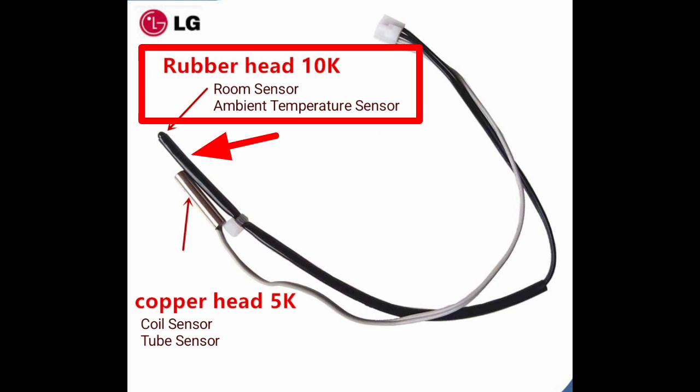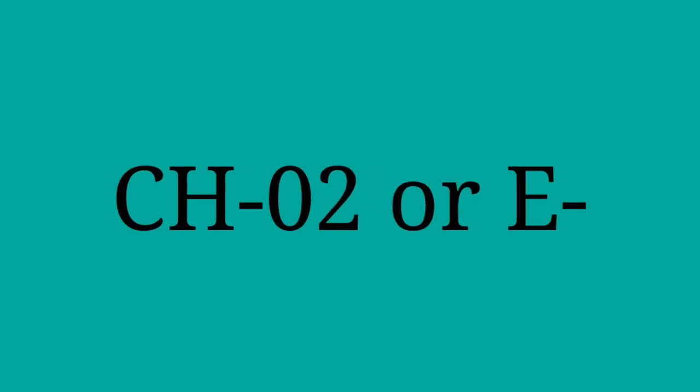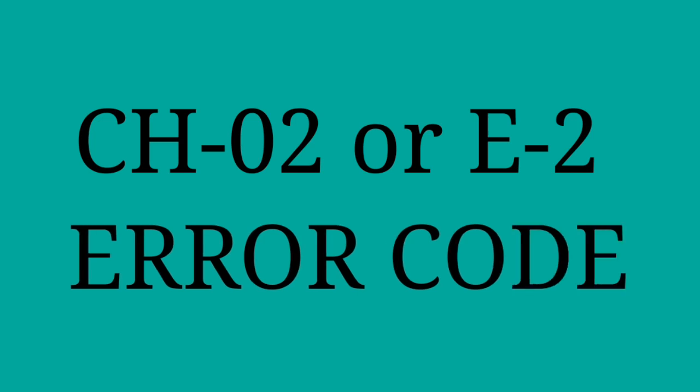One is a rubber head and another one is a copper head. The rubber head sensor is used as the air sensor, which shows us the room or ambient temperature. When this sensor is faulty, the error E1 is coming.